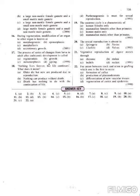Question 16: during regeneration, modification of an organ to another organ is known as epimorphosis. Regeneration is a type of asexual reproduction. During regeneration, modification of an organ to another organ is known as epimorphosis.